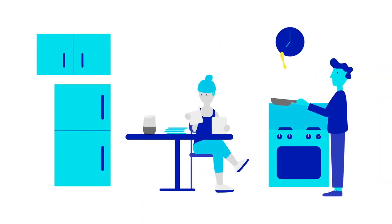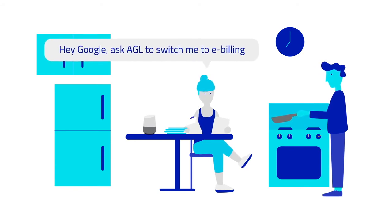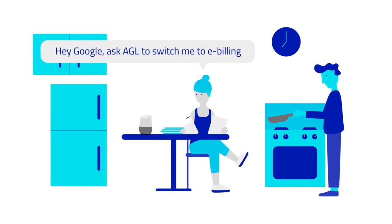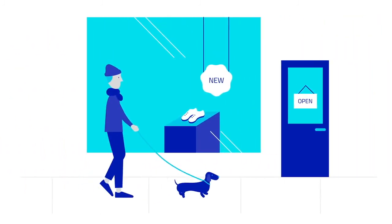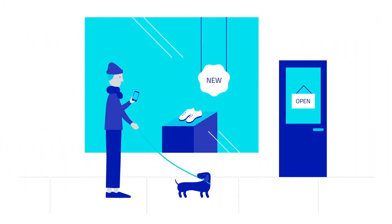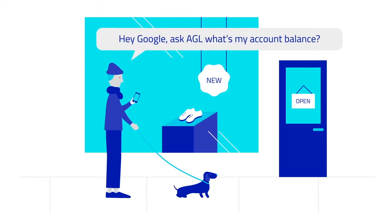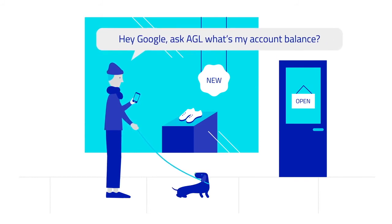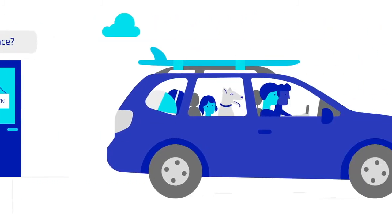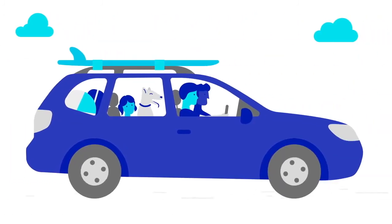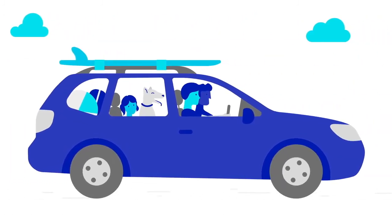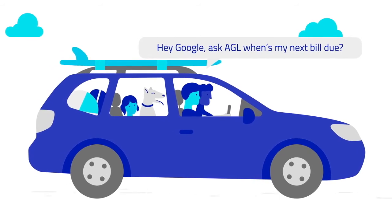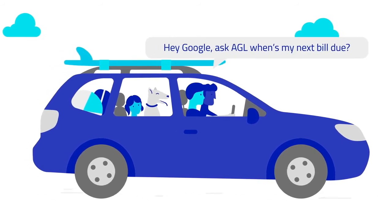Wondering how to reduce the amount of paper mail you receive? Say, 'Hey Google, ask AGL to switch me to e-billing.' Want to know whether you can splash out on that new pair of shoes? Say, 'Hey Google, ask AGL what's my account balance?' Or wondering if you took care of everything before heading on holiday? Say, 'Hey Google, ask AGL when's my next bill due?'